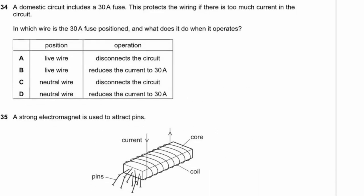Question 34. A 30-amp fuse in a domestic circuit should always be placed in the live wire, to minimise the length of live wire in the circuit. When the current becomes too large, the fuse melts and disconnects — breaking the circuit.